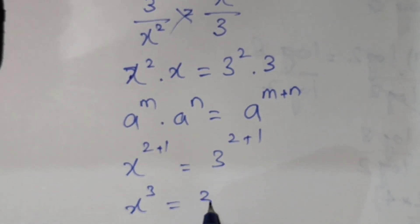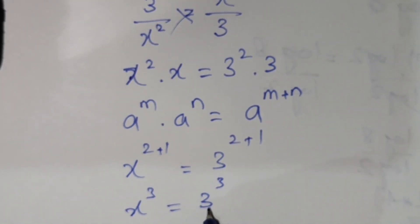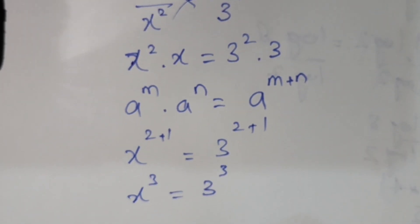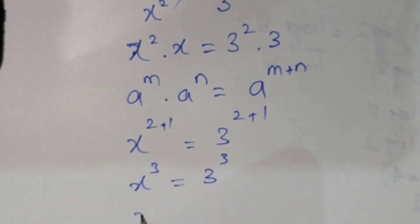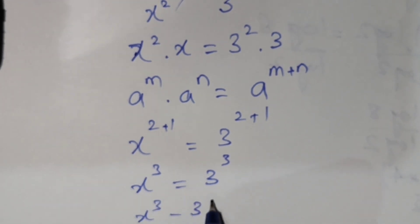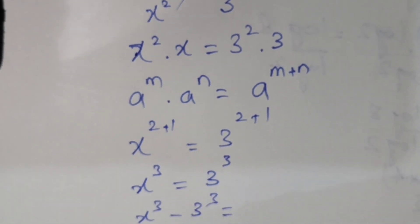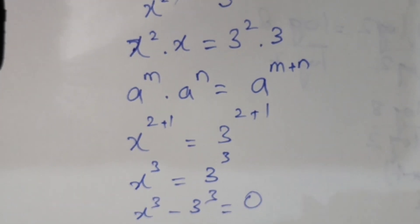This gives us x cubed equals 3 cubed. We take 3 cubed to the left side, so x cubed minus 3 cubed equals 0.